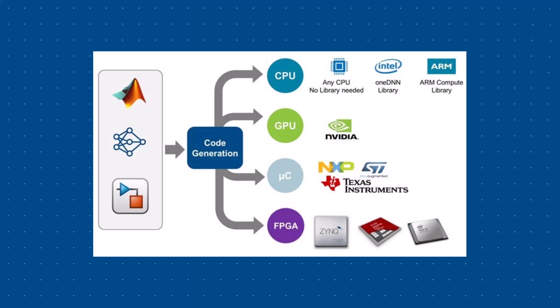For deployment to CPUs, GPUs, FPGAs, and systems on-chip, you can automatically generate C, C++, CUDA, and HDL code for your trained networks.